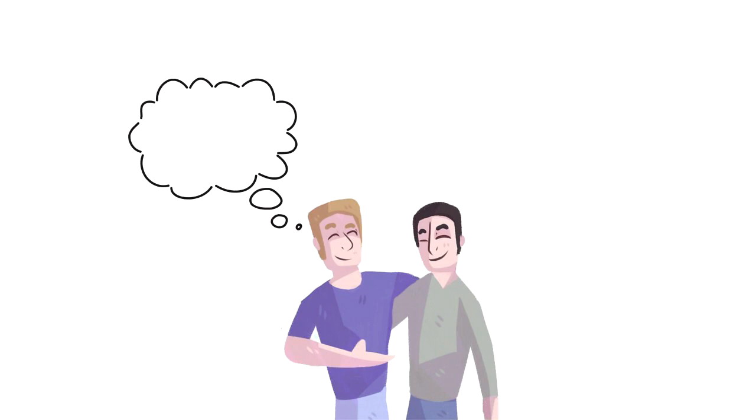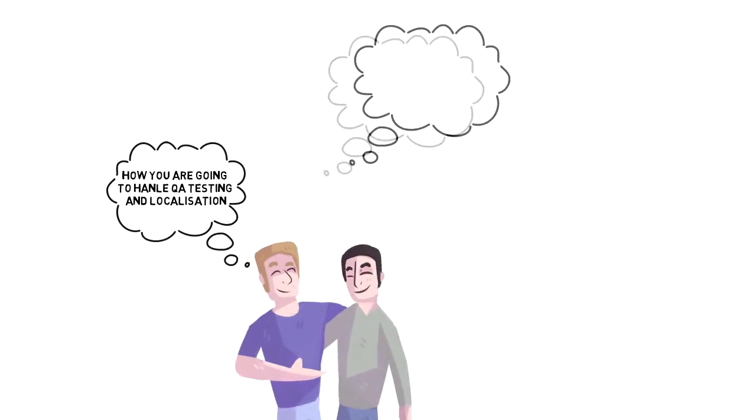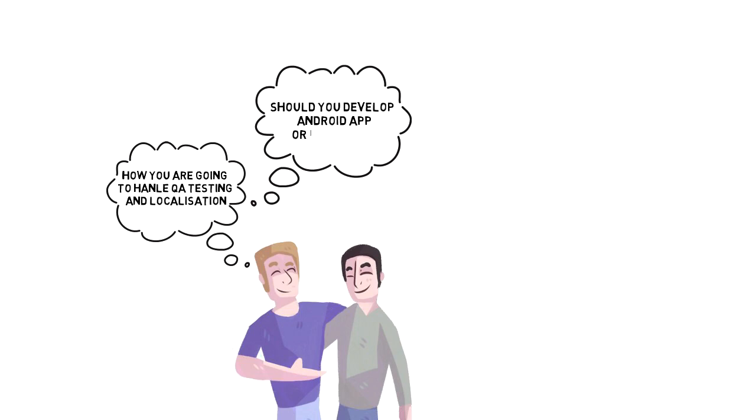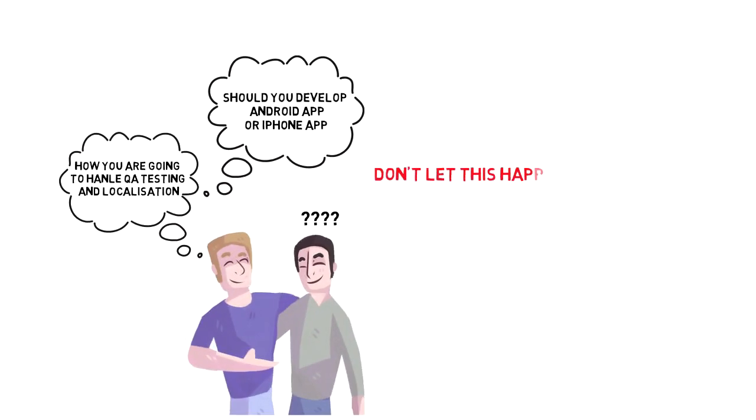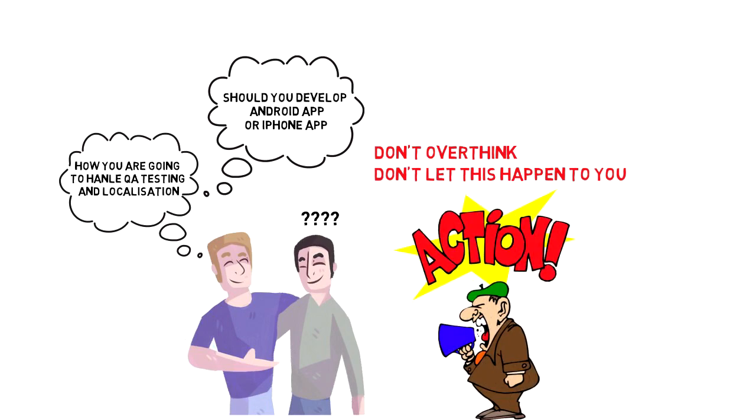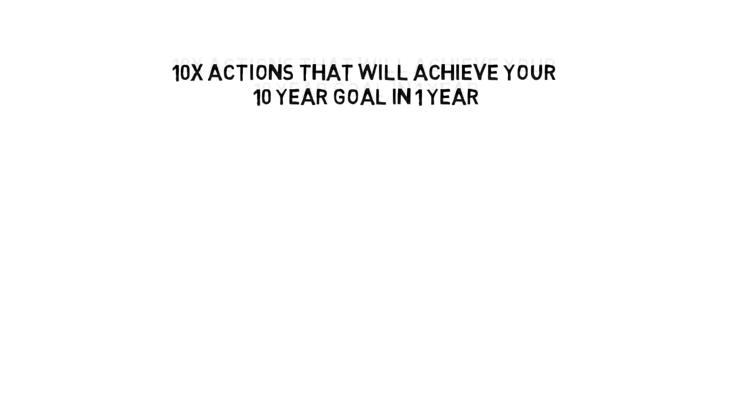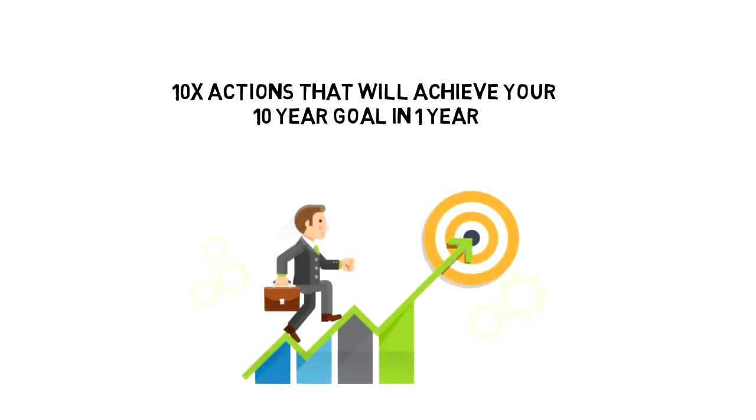You have never developed app before so you speak with your friend and he asks you questions about how you're going to handle QA testing and localization. Should you develop Android app or iPhone app or maybe both and eventually you get lost in so much details that you don't know what to do. Don't let this happen to you as this will terminate all your actions thinking that it is impossible. It is possible if you don't overthink but instead take actions and execute. Don't forget that you don't just take any kind of actions but 10x actions that will achieve your 10-year goal in one year.